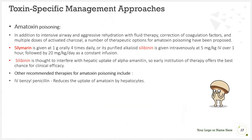For amatoxin poisoning, in addition to intensive airway management and aggressive rehydration with fluid therapy, correction of coagulation factors, and multiple doses of activated charcoal, a number of therapeutic options have been proposed. Silymarin is given at 1 gram orally four times daily, or its purified alkaloid silibinin is given IV at 5 mg/kg over 1 hour followed by 20 mg/kg per day as a constant infusion. Silibinin is thought to interfere with hepatic uptake of alpha-amanitin. Other recommended therapy includes IV benzyl penicillin, which reduces the uptake of amatoxin by hepatocytes.